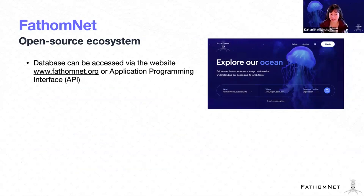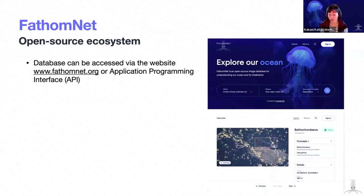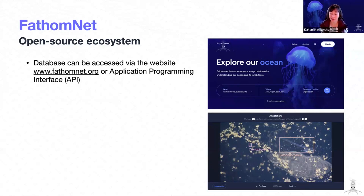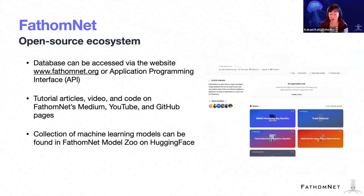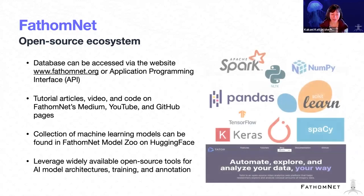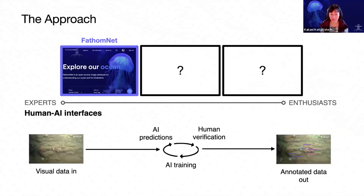We're trying to create an open-source ecosystem usable by many in our community. The database can be accessed by the website or API — this is what the landing page looks like. You can explore the data, look at different metadata, and see where observations appear on a map. You can also augment data in the database using a lightweight annotation tool available on the website. We've created tutorials, articles, video, and code found on FathomNet's Medium, YouTube, and GitHub pages. A collection of machine learning models can be found in FathomNet's Model Zoo — the big update is that we've moved the Model Zoo from a GitHub repo to Hugging Face, which Kevin and Lonnie will talk about today.